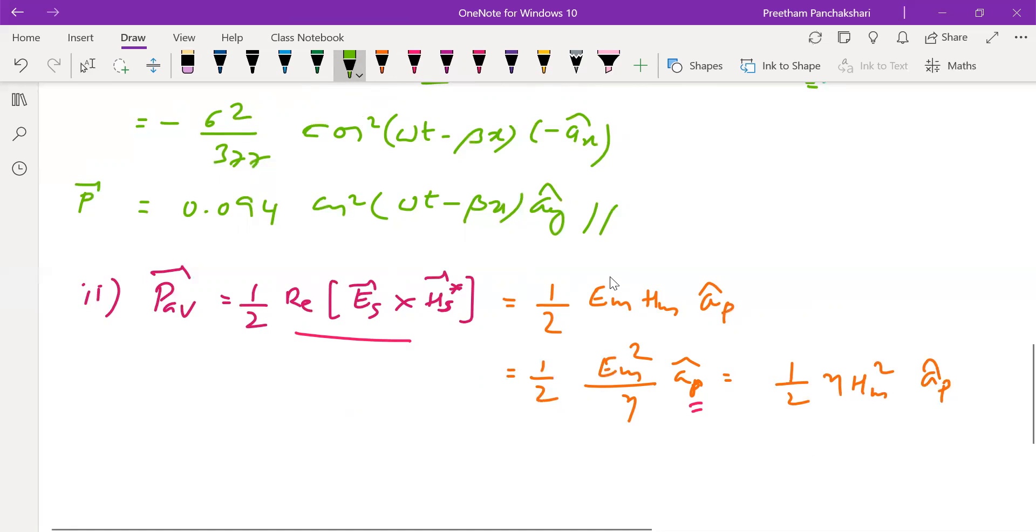And sometimes peak values will not be known. We will be knowing the RMS values. So that I might need to think of this formula: V_RMS = V_m/√2. That means for a sinusoidal wave, peak divided by root 2 will give RMS.